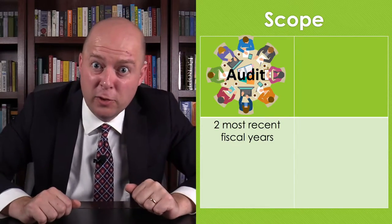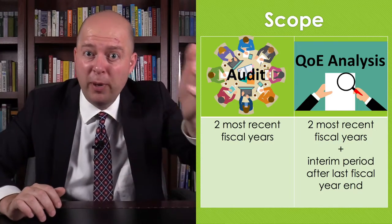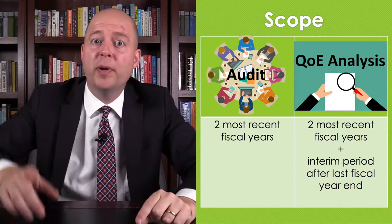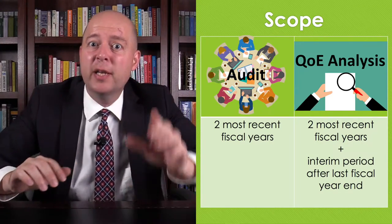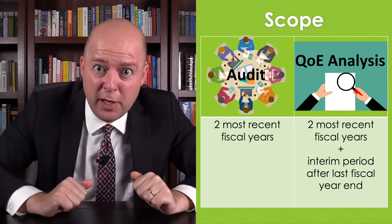In terms of scope, an audit usually covers the two most recent fiscal years. A quality of earnings report, on the other hand, will probably cover the last fiscal year or two, but it will also cover the interim period — anything that's occurred since the last fiscal year. Thus, if you commission a quality of earnings report on July 1st, 2021, for a company that operates on a calendar year basis, its most recent audit will have been through December 31st, 2020. But a quality of earnings analysis would cover not just the 2020 fiscal year, but everything that happened during the first six months of 2021.